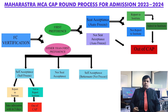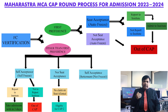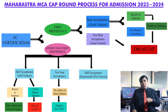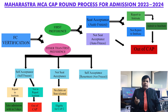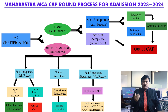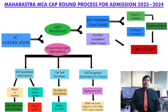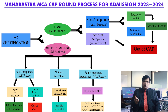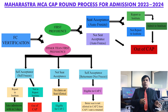In the second option, if the seat is not accepted, then you are still eligible for the CAP, but the previous college is not allotted to you. In case of betterment, you can select better colleges. For example, in the betterment option, if you do not get a better option in CAP 2, then the CAP 1 option remains as it is.